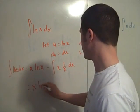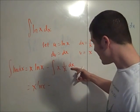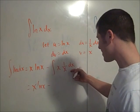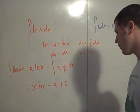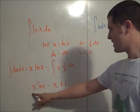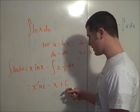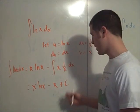This is x log x minus, this is just 1 times dx. This is integral of dx. Integral of dx is just x plus c. So, integral of log x dx is x log x minus x plus c, since that's an indefinite integral. Got to have that constant.